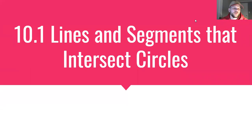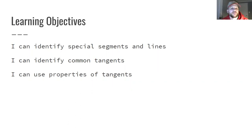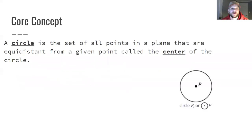This is the tutorial on Big Ideas Geometry Section 10.1, Lines and Segments that Intersect Circles. The three main learning objectives for this section are to identify special segments and lines, identify common tangents, and use properties of tangents.